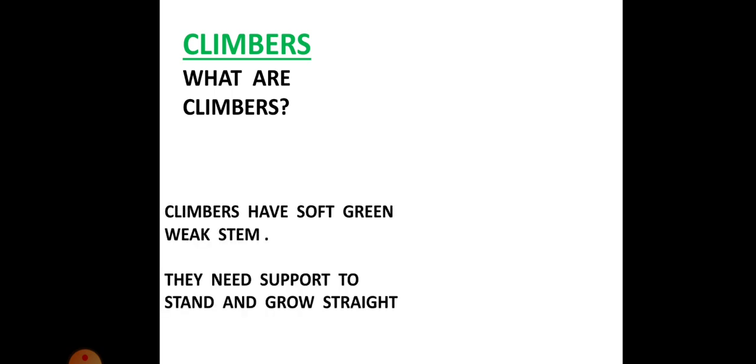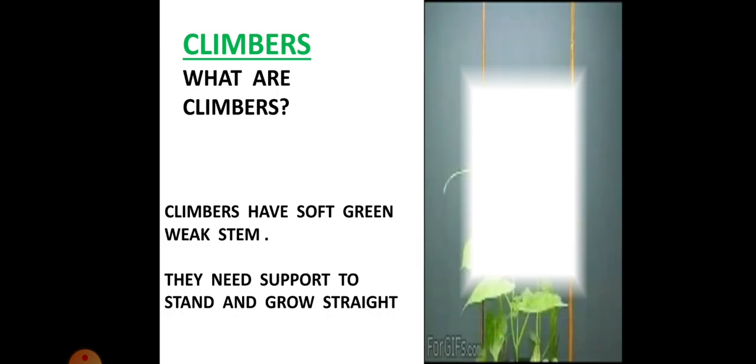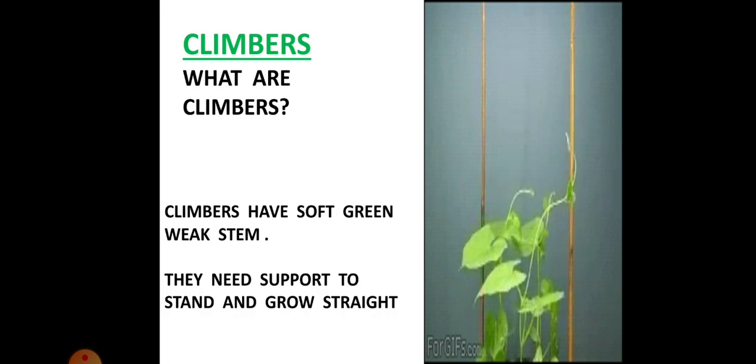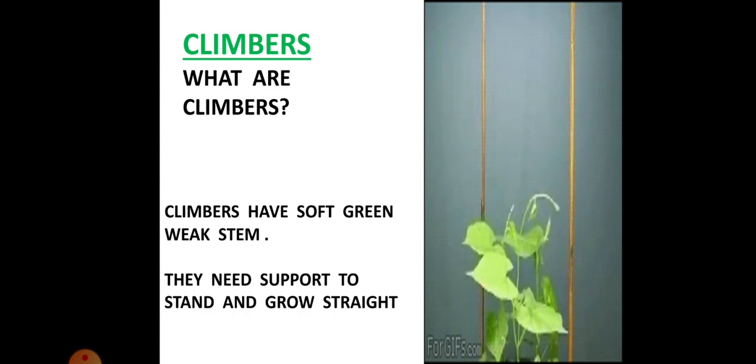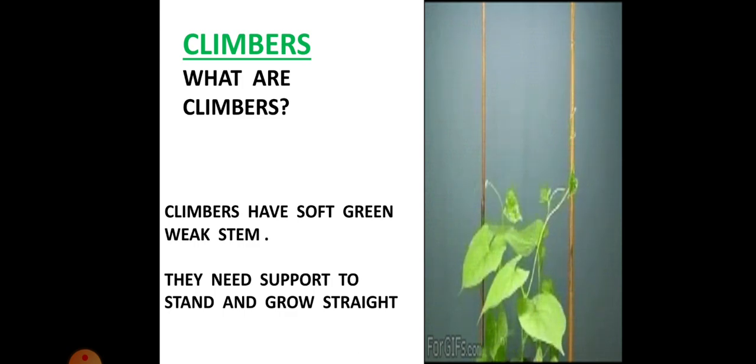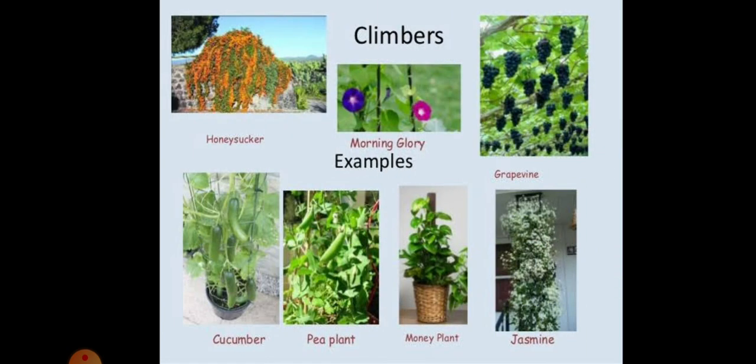Next are the climbers. What are climbers? Climbers have soft green weak stem. They need support to stand and grow straight. Look at the climber finding a support, hunting for a support, sending the signal. And slowly the climber finds his support, holds it and tries to grow. These are some examples of the climbers: honeysuckle, morning glory, grapevine, cucumber, pea plant, money plant and jasmine.